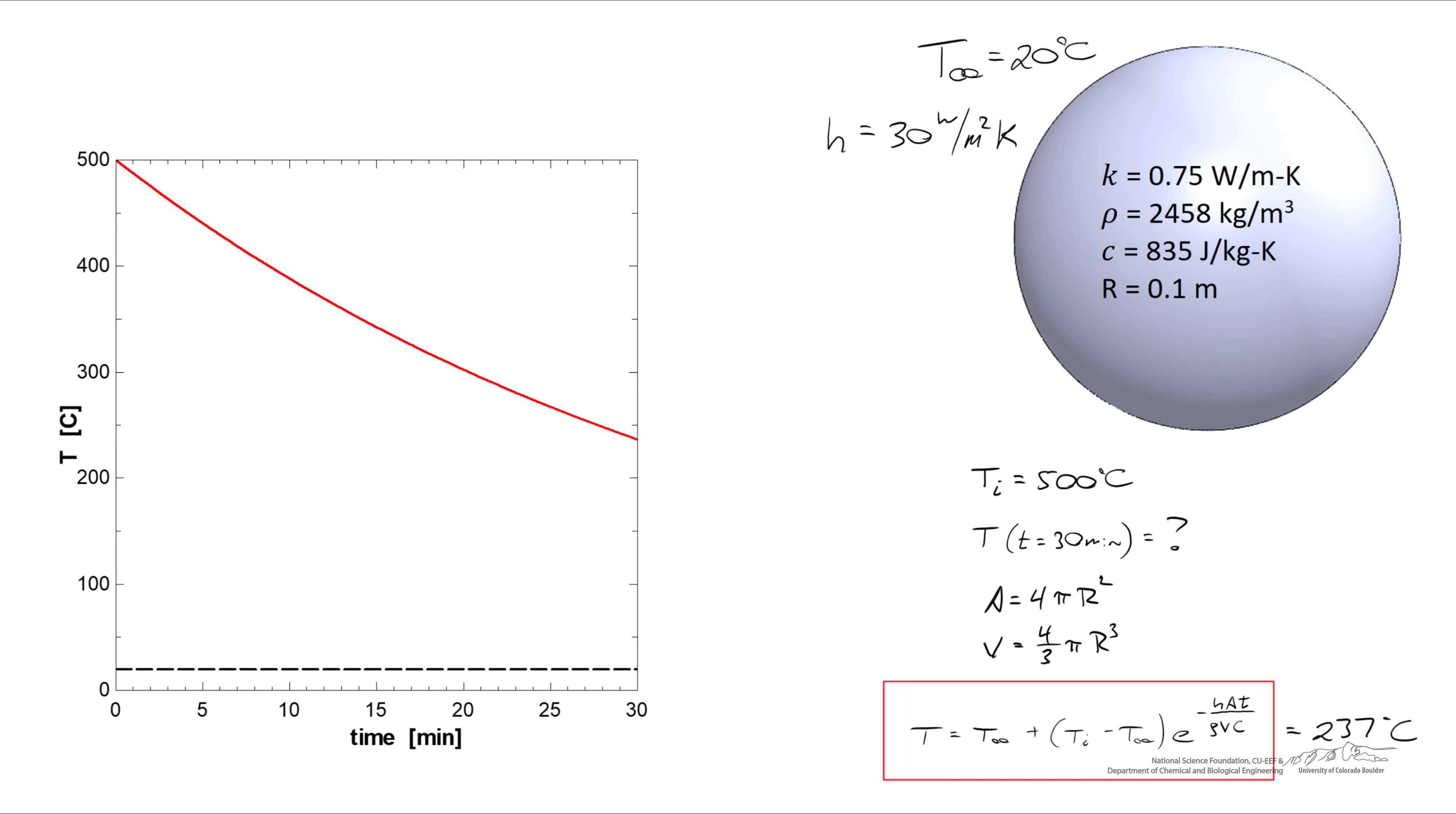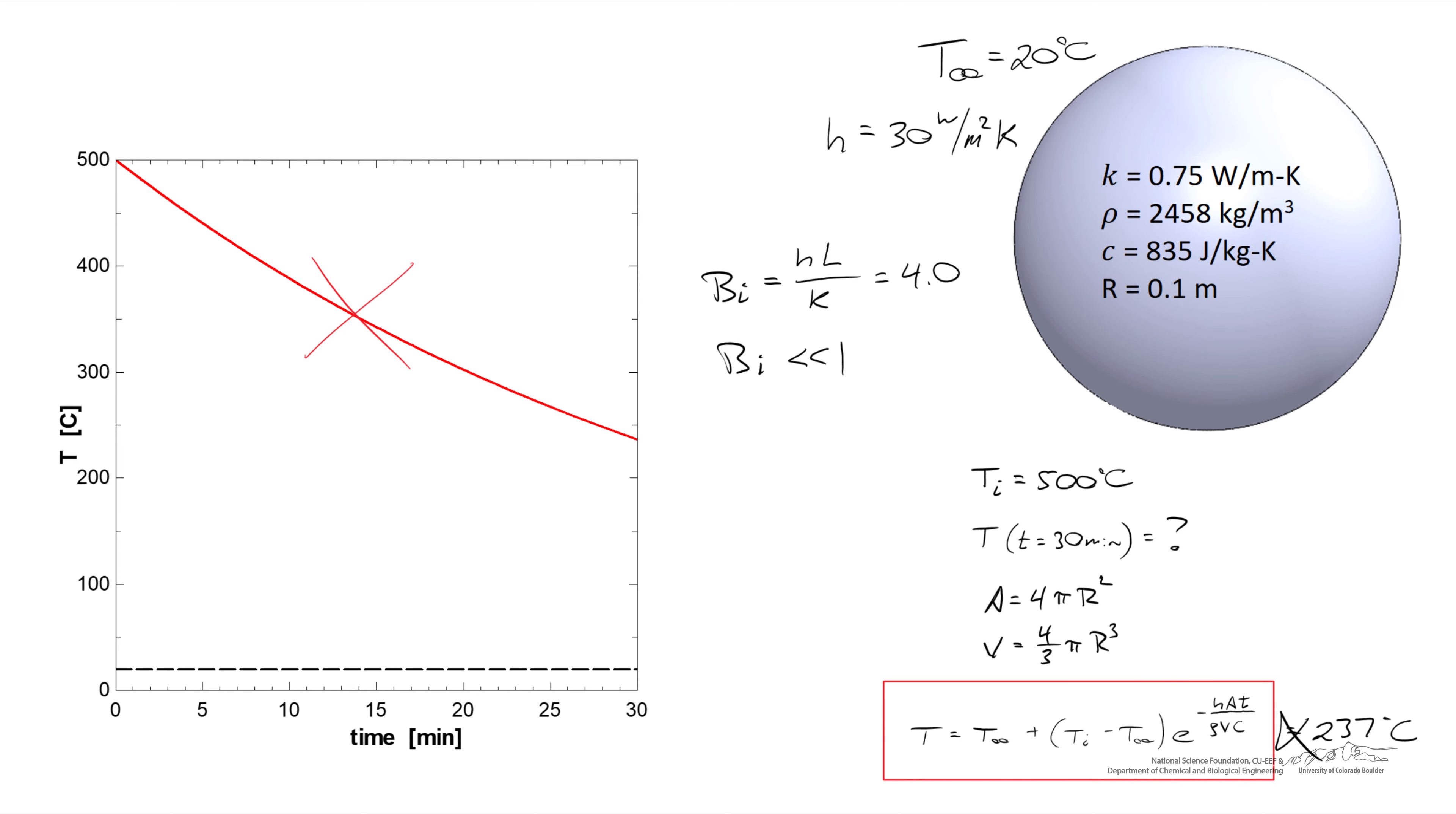My hope right now is that you disagree with what I've just done. My hope is that you are saying it is not equal to 237 degrees C. My hope is that you've considered the Biot number, which we've established at the beginning is HL over K, and in our instance a Biot number is about 4.0. And to use this equation, remember we have to have a Biot number that's much less than 1. I'll show you a simulation now that indicates this graph is not true, nor is our temperature of 237 degrees.